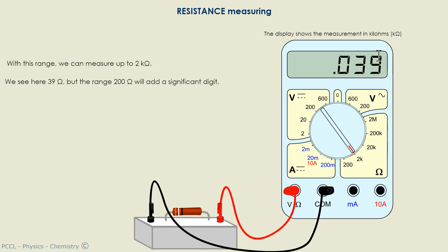I can go on 2 kilo ohms, that is up to 2000 ohms. 2 kilo ohms equals 2000. And I read that it is about 0.039 kilo ohm.